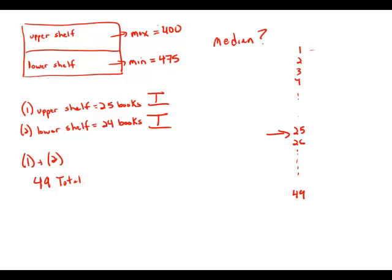The 25th member is going to be the median. Well, we know that the first 25 occupants on the list are going to be the 25 from the upper shelf because they have fewer pages, and we also know that the maximum on that list, the 25th entry, will be the entry that has 400 books.